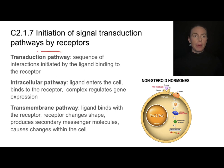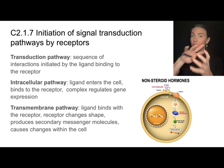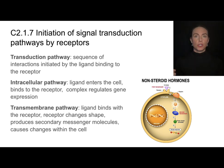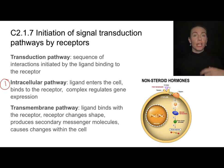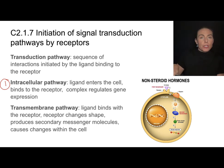When I say transduction pathway, I mean that sequence of interactions that gets kicked off by the binding of the ligand with the receptor. Whatever happens after ligand-receptor binding is called a transduction pathway, and there are two main ones. The intracellular pathway is when the ligand can enter the cell, binds to a receptor inside the cell, and that complex—the ligand and the protein receptor—goes into the nucleus and regulates genetic expression.